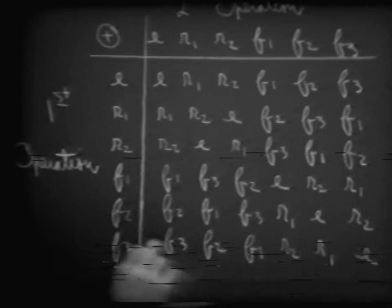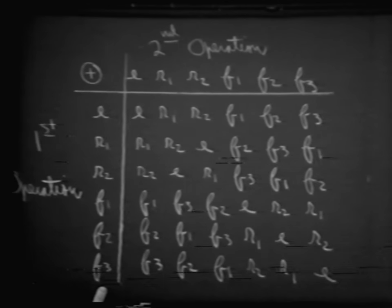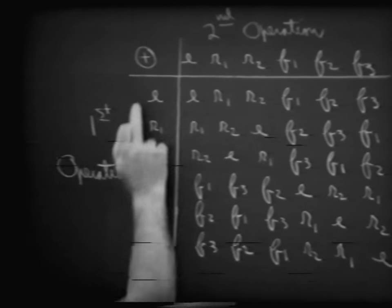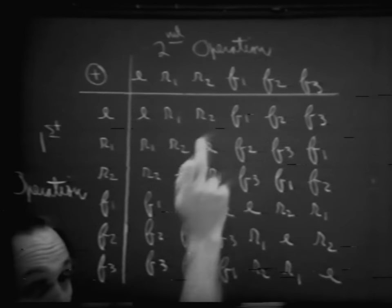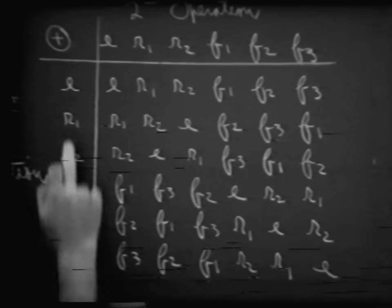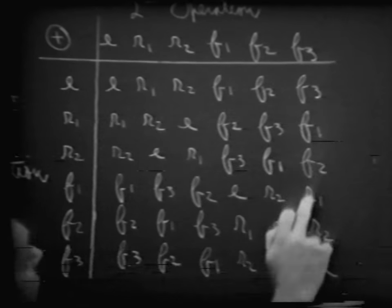We can continue and look at any number of examples. After a point, we'd like to make a table — just as in addition we make an addition table, or in multiplication we have a multiplication table. So it is here with respect to these six elements. The elements down the left column are our first operation, and across the top are what follows. For example, F sub 1 followed by F sub 3 should be R sub 1.